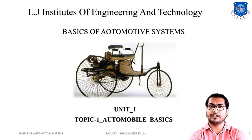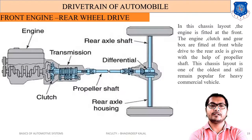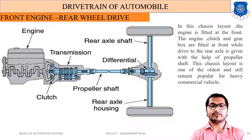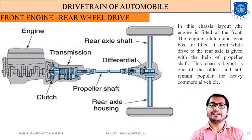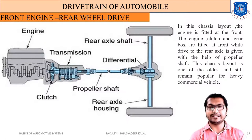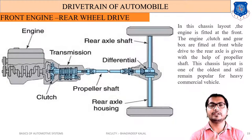Let us discuss front engine rear wheel drive first. In this drive system, the engine is mounted at the front axle or front side of the vehicle, and power is transmitted to the rear axle with the help of a propeller shaft, through the differential, to the rear wheels.